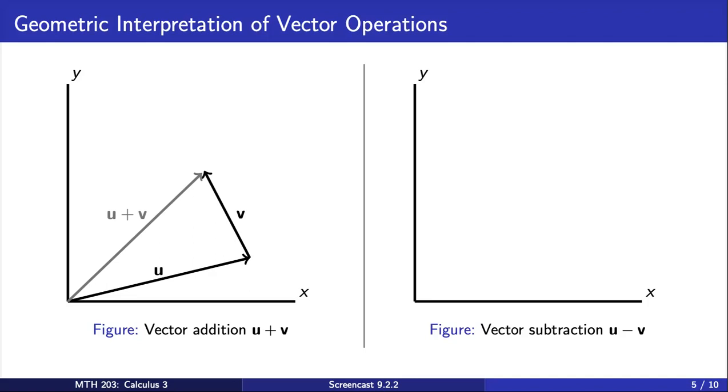Vector subtraction can be interpreted similarly. To visualize this, we place both u and v in standard position. Then, the vector u minus v is the difference of the displacements from the tip of v to the tip of u.